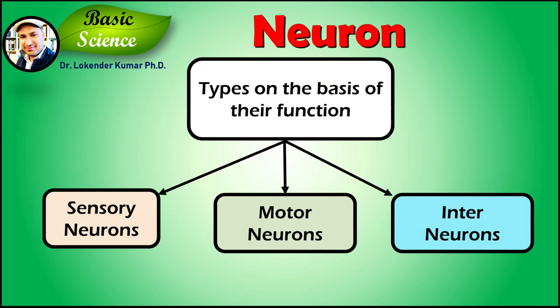At this point, the neuron releases neurotransmitters. So that was a brief introduction of neurons and the process of their signaling transduction.